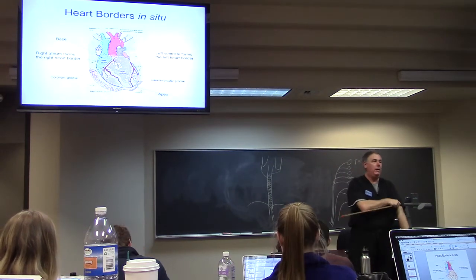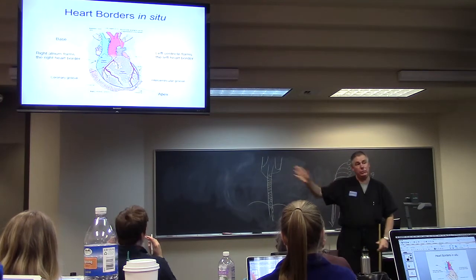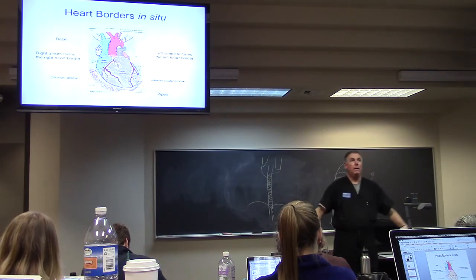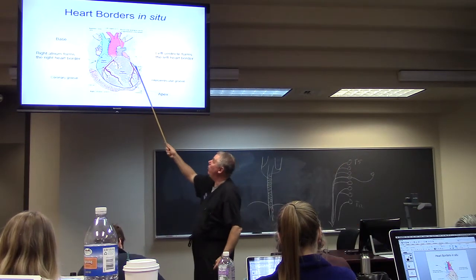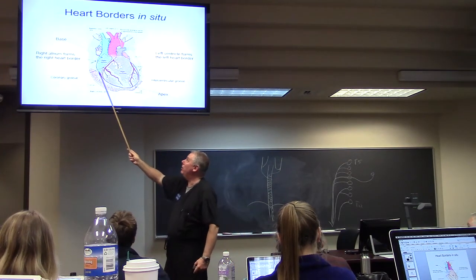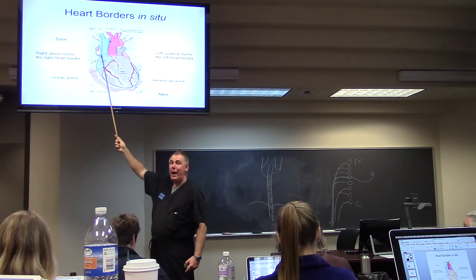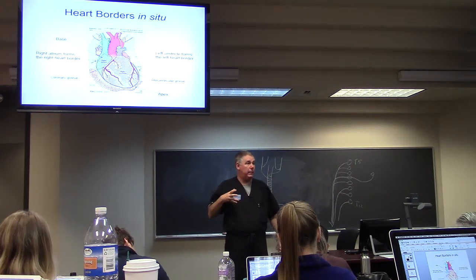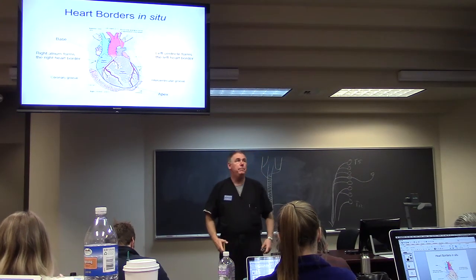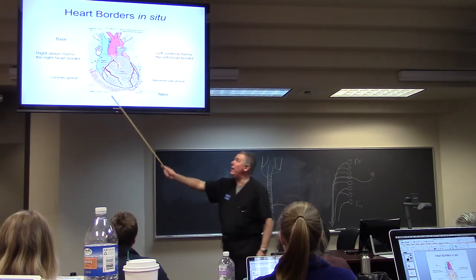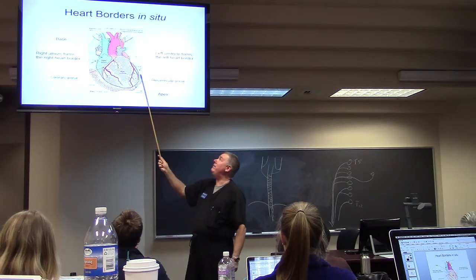If you look at an X-ray, you need to know what forms the two heart borders. The left heart border is formed by the left atrium. The right heart border is formed by the right atrium. So if you've got an enlargement in your heart's shadow on the right, you need to know that's right atrial enlargement. It's the right atrium on the right, the left ventricle on the left.